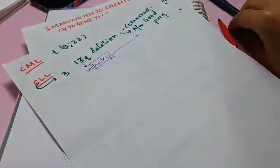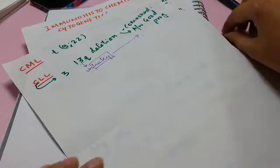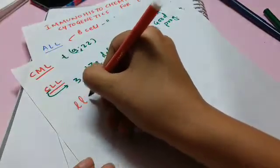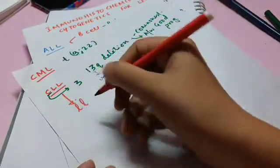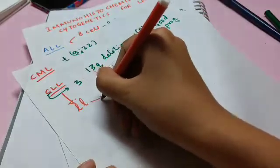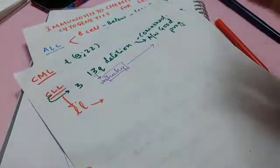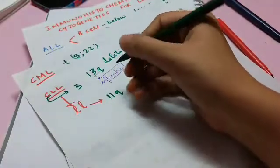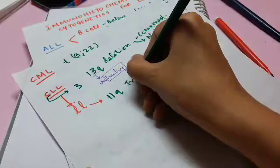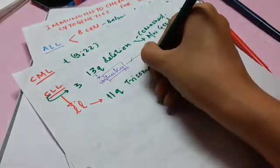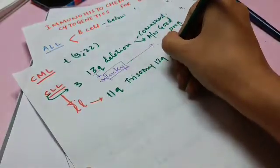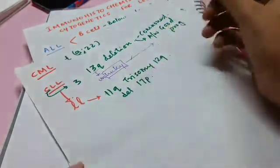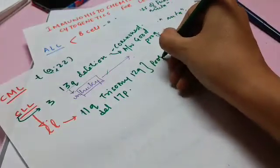After CLL, one more thing in CLL is, LL are sort of like LLs. So also the translocation, another translocation is 11Q, and trisomy 12Q, and another one is deletion 17P. So these three have poor prognosis.